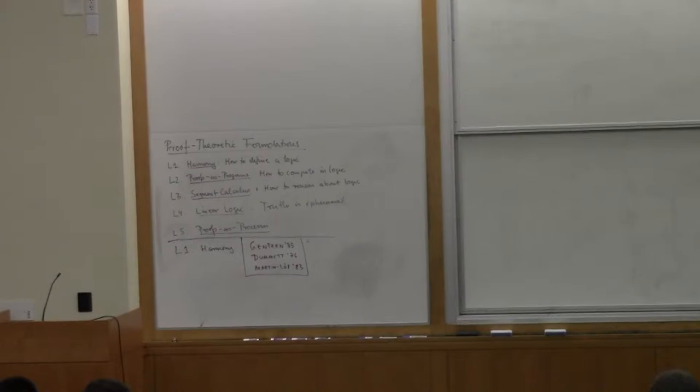In the first lecture, entitled Harmony, that's really all about how to define a logic. This work goes back to Gentzen's work in 1935. Michael Dummett had a very influential series of lectures in 1976, and Martin-Löf had a very influential paper in 1983. Then in the second lecture, which is entitled Proofs as Programs, I will talk about a small corner of the big picture that Bob drew. We'll talk about how to compute in logic. So we go from pure logic or reasoning to actual computation and the connection to programming languages.